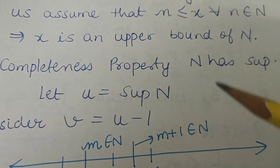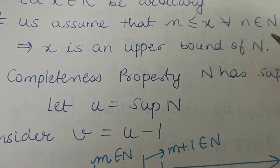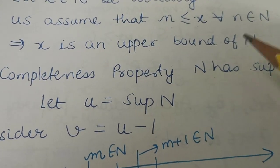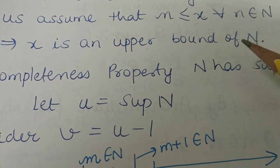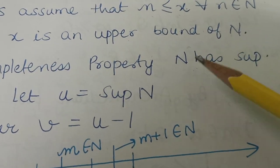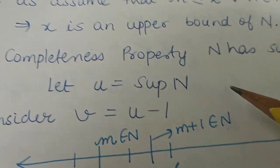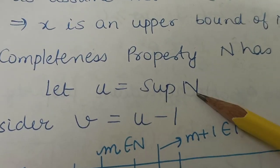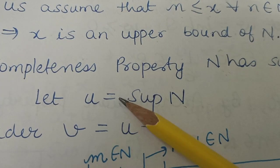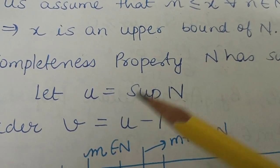So by the completeness property, since x was an upper bound of the natural numbers, the set of natural numbers must also have a supremum. We name this supremum u.